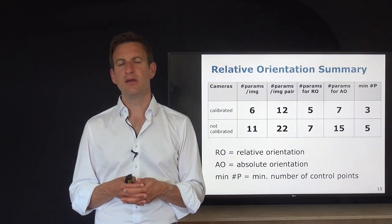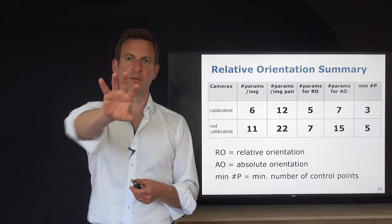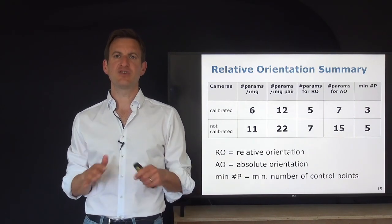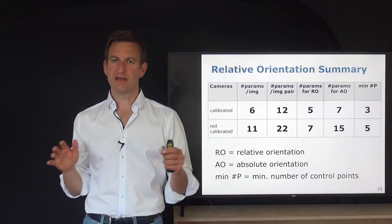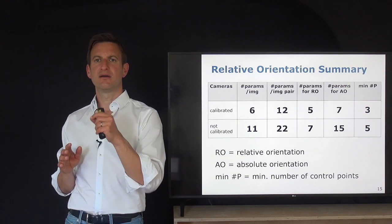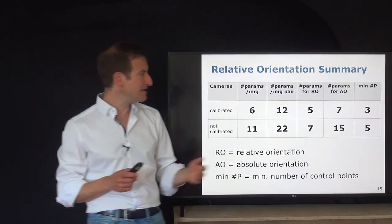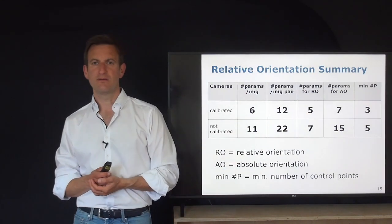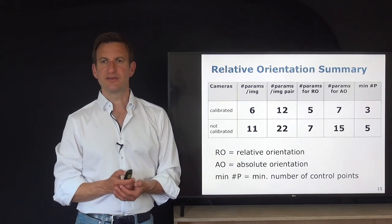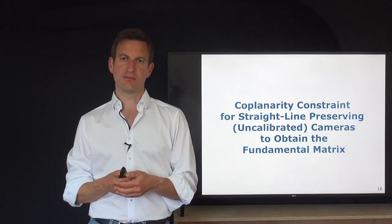Relative orientation plays an important role because it is the information you can actually estimate just by using a camera. If you take a camera and move it through the world, you can estimate the relative orientation parameters without knowing anything about the scene — just from image information. This works by finding correspondences between two images: points that are identical but whose world locations are unknown.